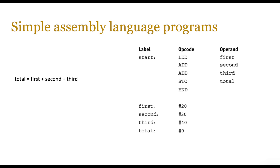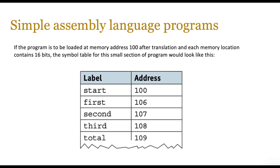You will probably see a simple symbol table like the one on screen, where you have labels and their corresponding addresses. This is where you would make changes — for example, 'start' is at address 100, 'first' is at 106, 'second' at 107, 'third' at 108, and 'total' at 109. In the exam you're probably going to be given symbol tables like this, or you might be given a context question where you will need to populate a symbol table from a given description — the headings will be provided and you simply put the labels and correct addresses in the right place.